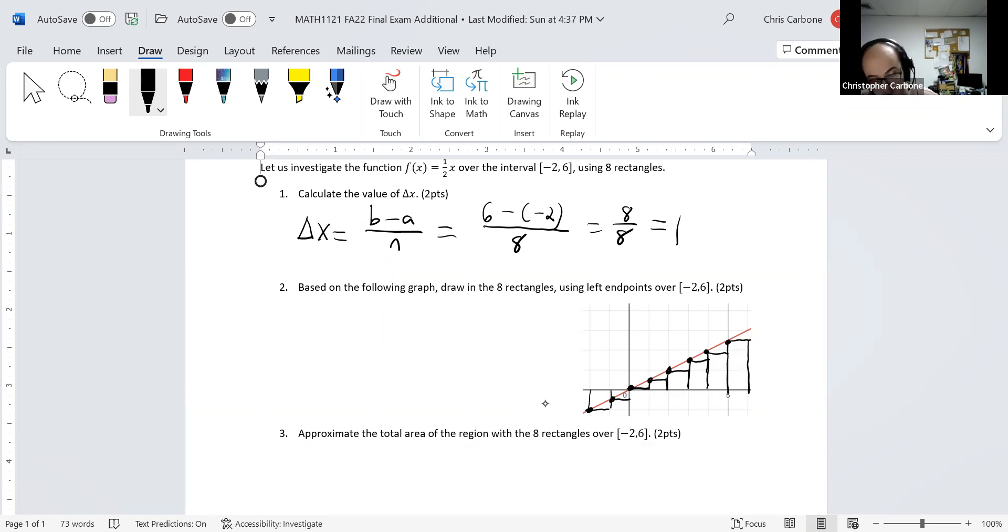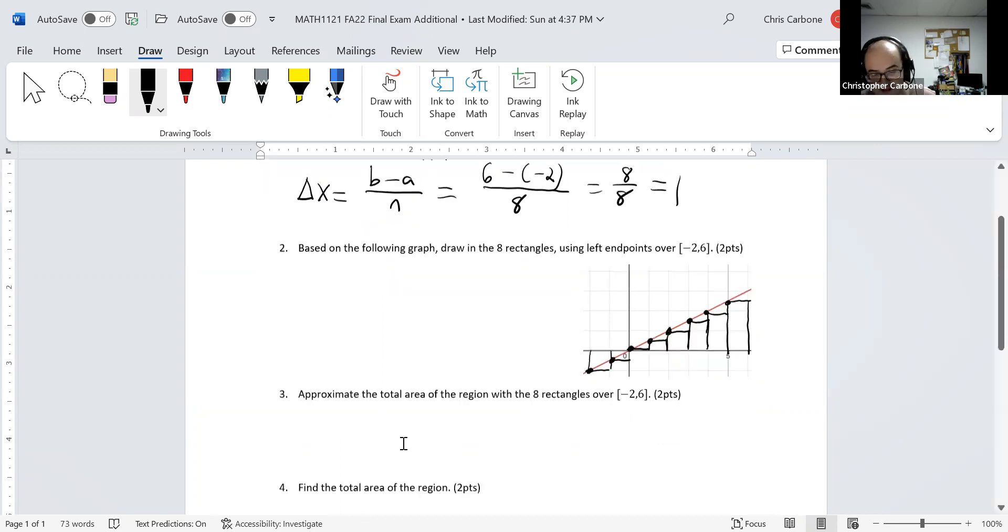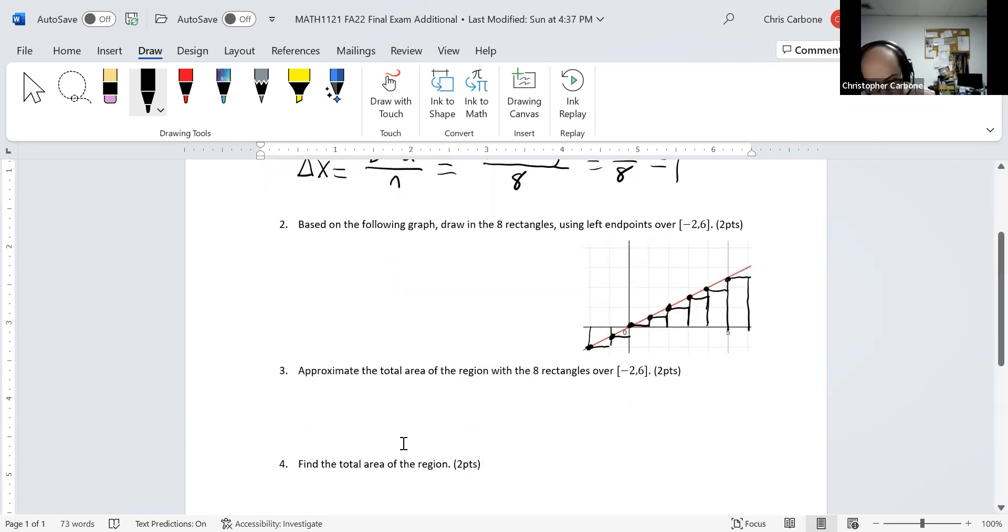And for the third part here, we want to approximate this total area of the region with these eight rectangles. Since the first two here are below the x-axis, we need to take the absolute value bars of these ones. So, the area for this would be 1 times the absolute value of f of negative 2.